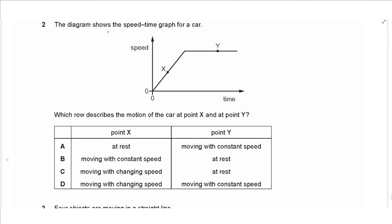Question 2 shows a speed-time graph for a car. At point X, we have constant acceleration since the gradient of the graph is constant — it's a straight line. At point Y, the speed is constant since the gradient is zero, meaning acceleration is zero. The answer is D.